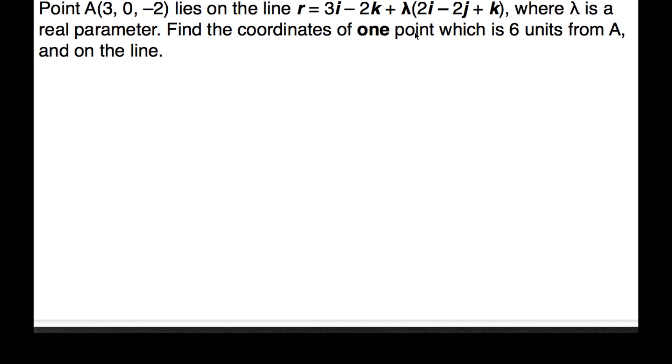Find the coordinates of one point, there are two of them, which is 6 units from A and on the line. So basically you've got a line, you've got a point on that line, and you want to find one of those two points which needs to be 6 units from point A.